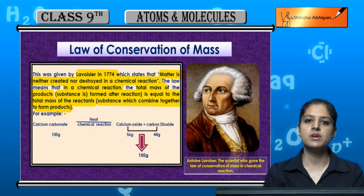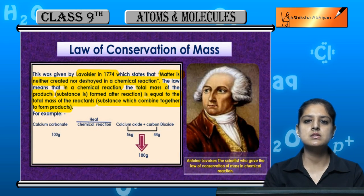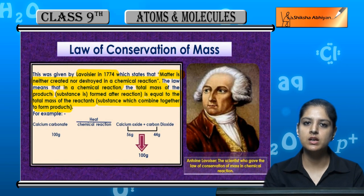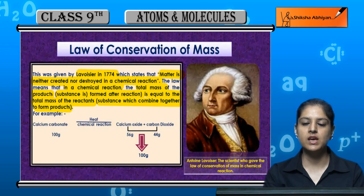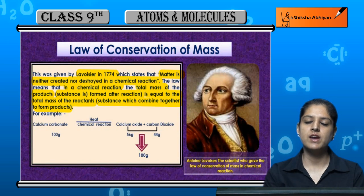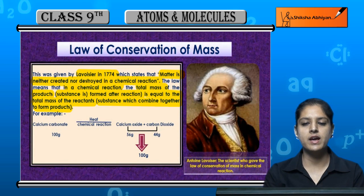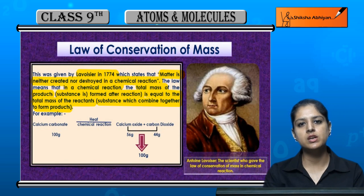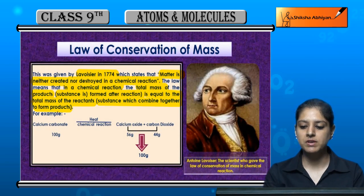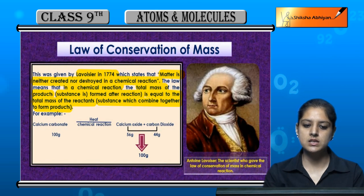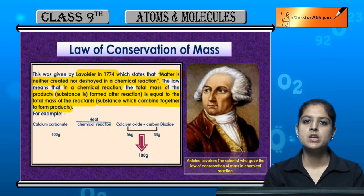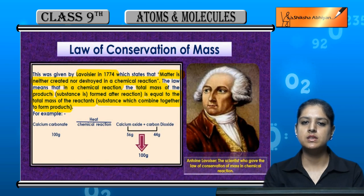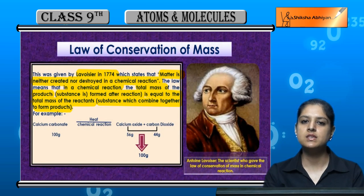It is not that we have 5 grams of reactants but 10 grams of product — mass does not increase, it is not created. Nor does it mean 5 grams of reactants gives only 2 grams of product — mass is not destroyed. So matter is neither created nor destroyed, and the total mass of reactants and products remains constant and equal.